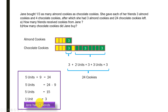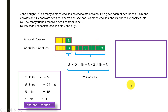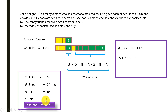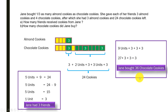Now for the second question: how many chocolate cookies did Jane buy? The total chocolate cookies corresponds to all units plus the remaining amounts. Counting the units: one through nine — nine units — plus three plus three plus three. One unit equals three, so nine units equals 27, plus three plus three plus three plus three equals 36. Jane bought a total of 36 chocolate cookies.